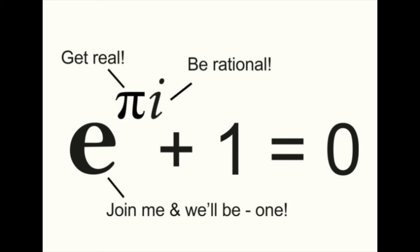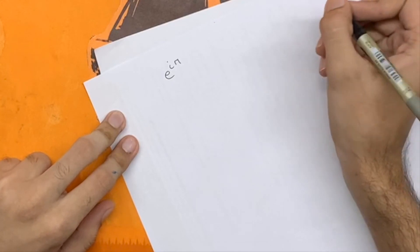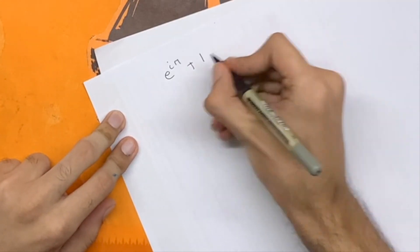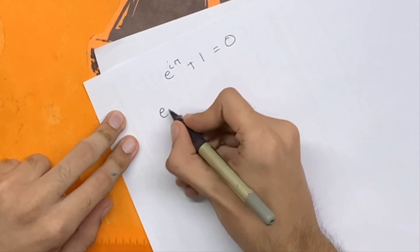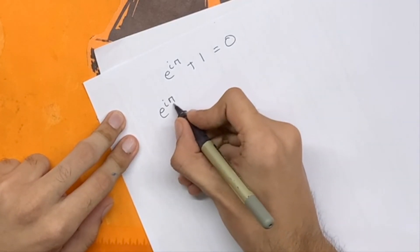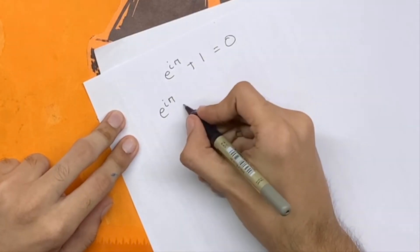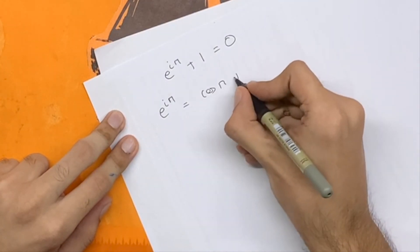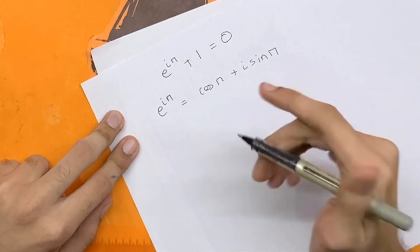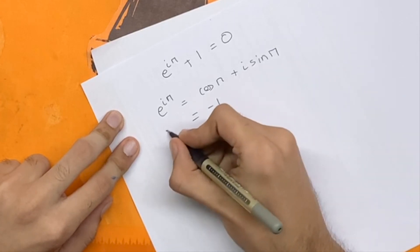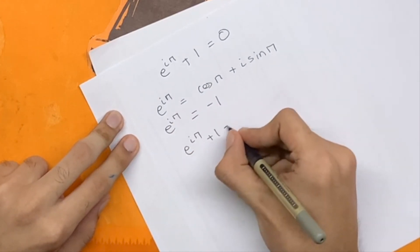Now I'm going to talk about the most famous formula — also referred to as the most beautiful formula in maths: e to the i·π plus 1 equals 0. For e to the i·π, let's plug π in as x in the formula we just derived. We get cos π plus i·sin π. Sin π is 0 and cos π is minus 1, so we're left with minus 1. Therefore, e to the i·π plus 1 equals 0.